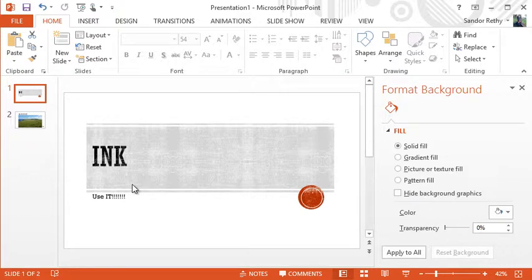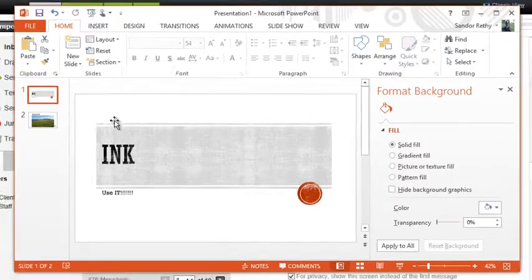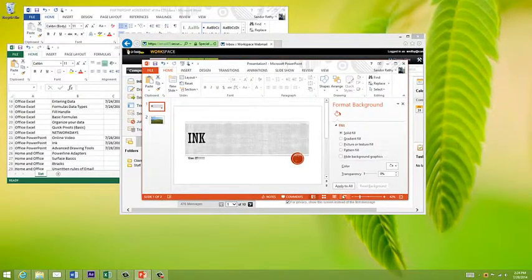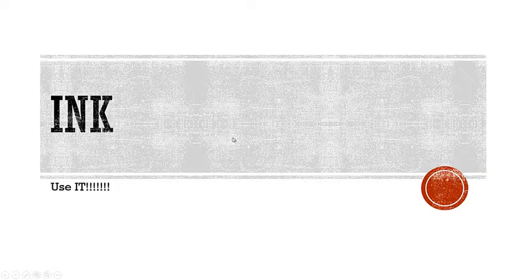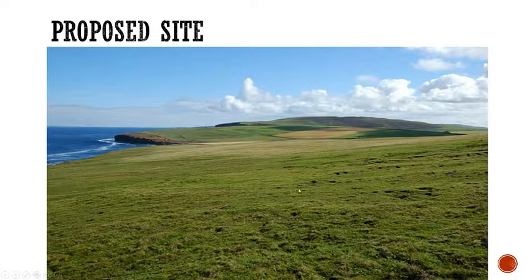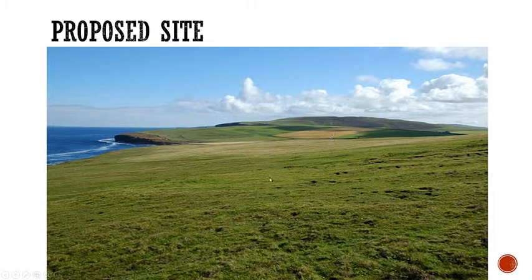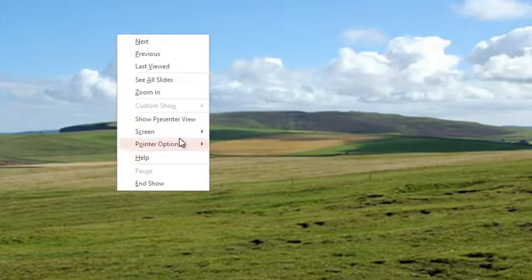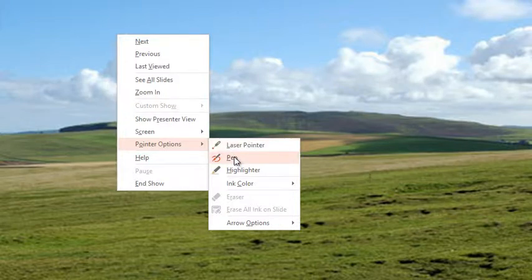It's actually a lot more useful than a hand on a whiteboard or trying to get your shadow into the exact perfect area. Within PowerPoint, if I play the show and we've come to a picture — let's say I'm using a picture as an example, but you could apply this to anything — a proposed site for the new corporate golf course. If I right-click on that slide, you have pointer options: a laser pointer, a pen, and a highlighter.